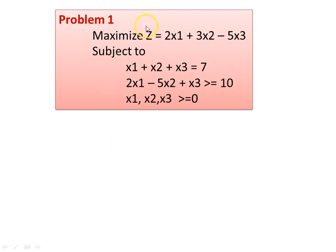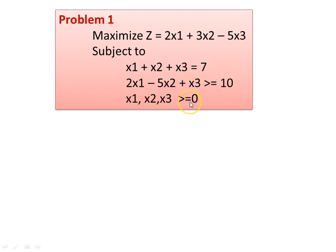Maximize z equal to 2x1 plus 3x2 minus 5x3, subject to the constraint x1 plus x2 plus x3 equal to 7, and 2x1 minus 5x2 plus x3 greater than or equal to 10. x1, x2, x3 are greater than or equal to 0.